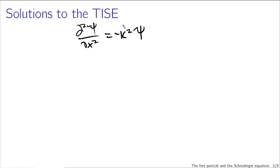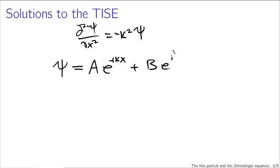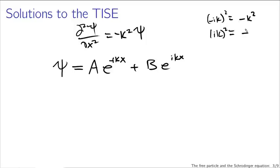Taking the second derivative giving you a constant squared immediately suggests we look for exponential solutions. The general solution is psi equals A times e to the minus ikx plus B times e to the plus ikx. Taking the second derivative of the first term gives minus ik squared, which equals minus k squared by the rules of complex numbers — matching our equation. The same applies to the second term. So this is our general solution.